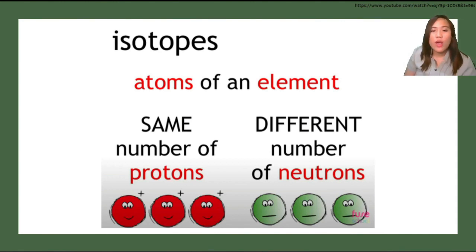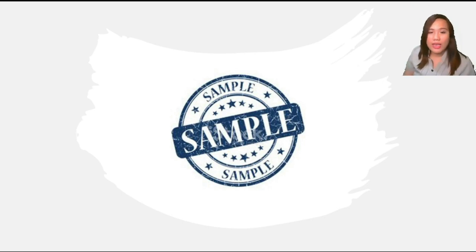I will show you an example and we'll answer it together so you can analyze and understand what is an ion and what is an isotope. We have an example of isotope here—the element sodium—and we need to find the mass number.